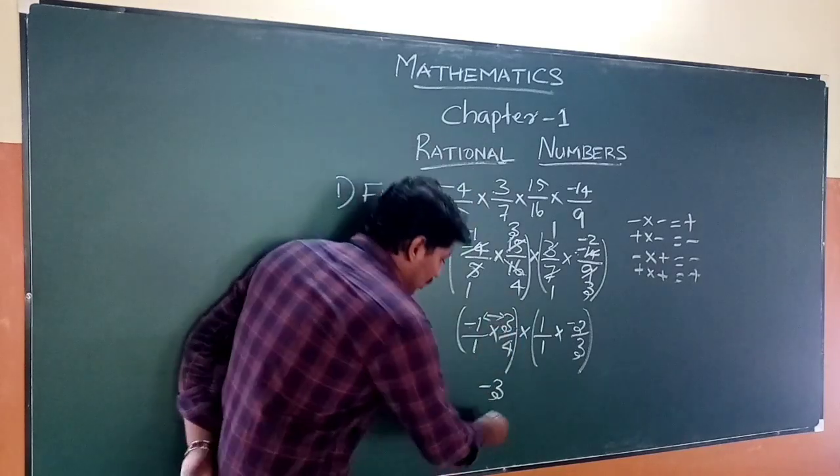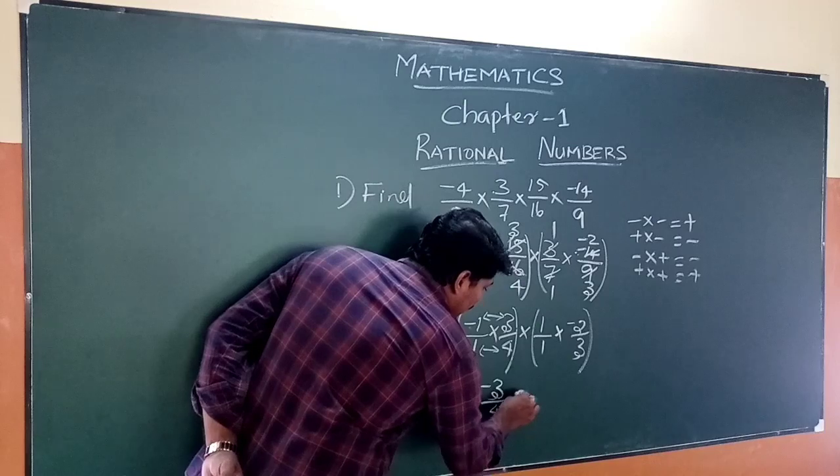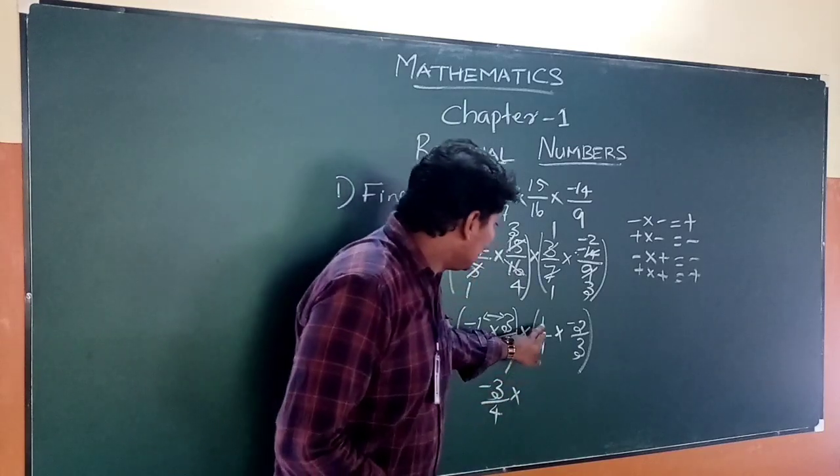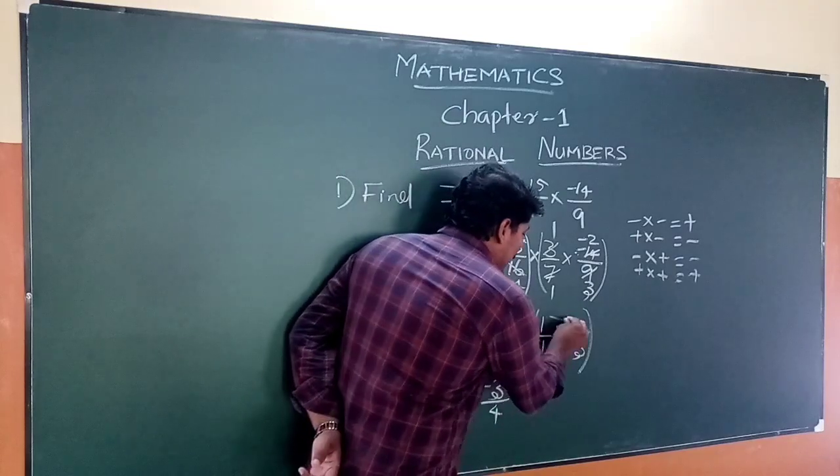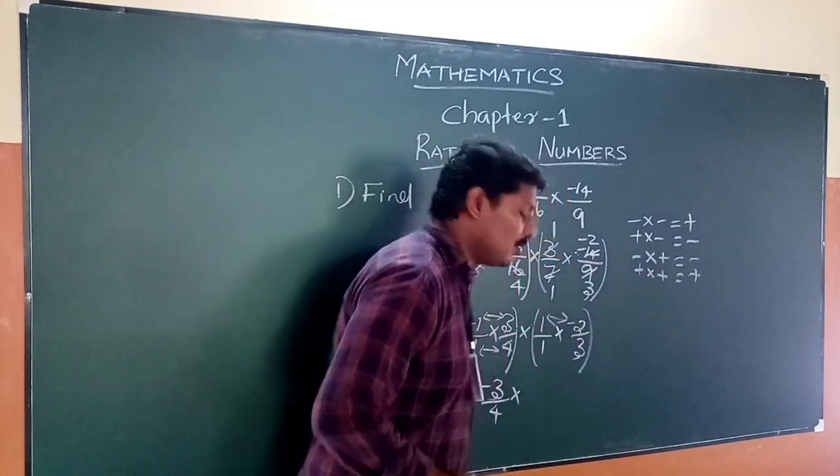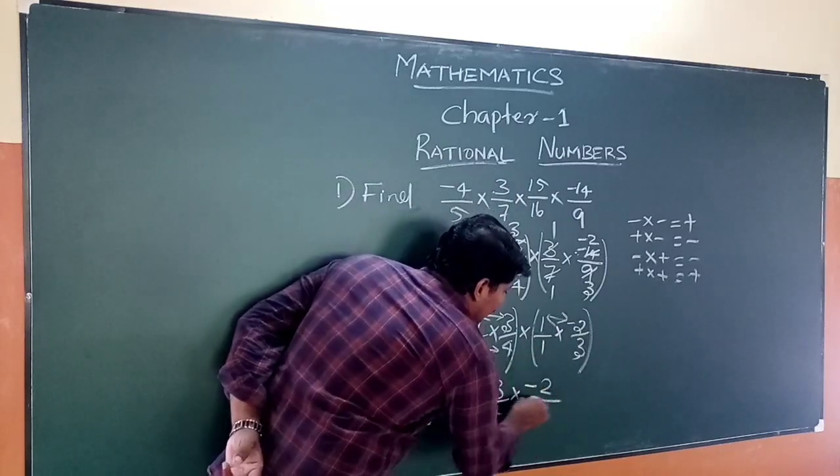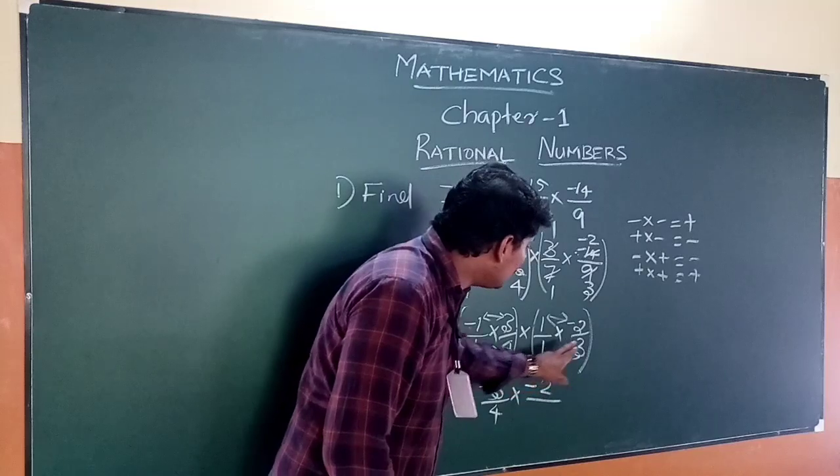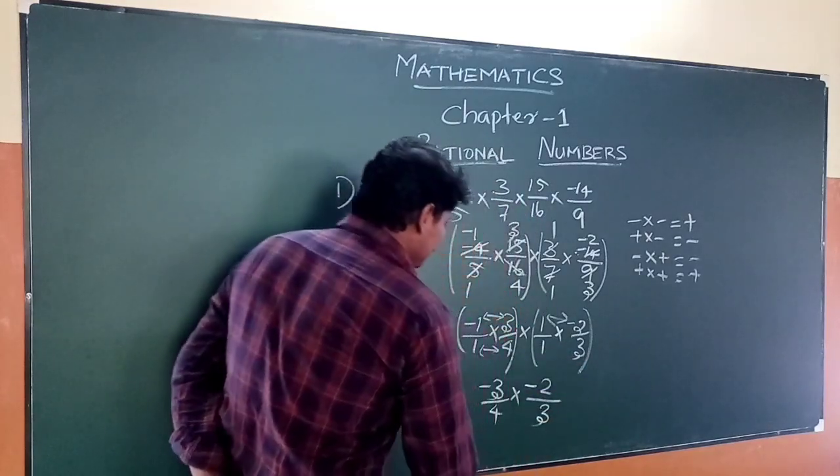We have -1 × 3 divided by 1 × 4. Then -1 × -2, which gives positive, divided by 1 × 3.